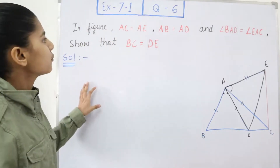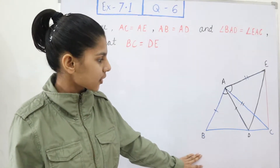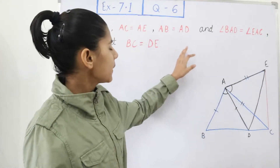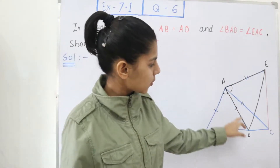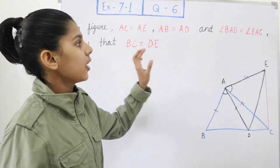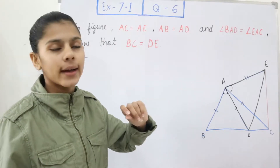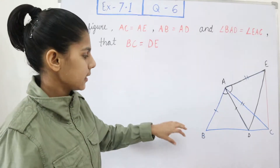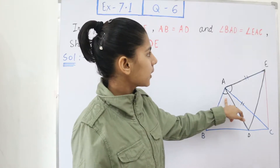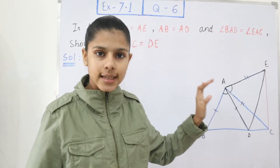The question is: in the figure, AC is equal to AE, AB is equal to AD — these sides are given equal to us. And angle BAD is equal to angle EAC. These two angles are equal.